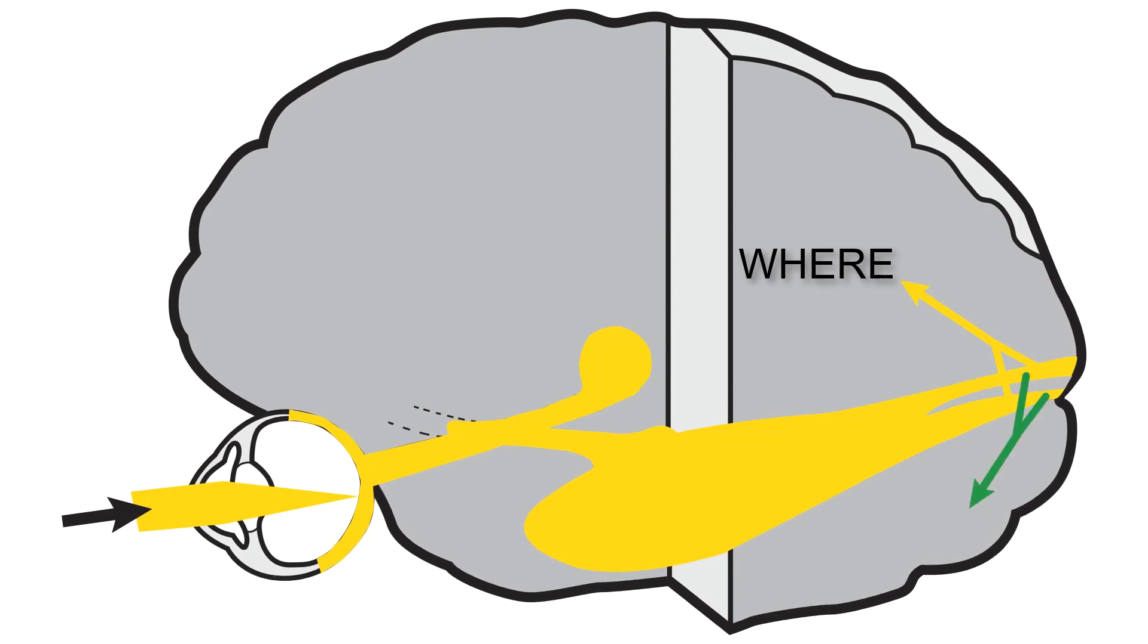The ventral perceptual stream conveys the signal to temporal vision-associated cerebral cortex for recognition of viewed material. It tells you what you are viewing and whether it is familiar. Vision Pathway Part 7 reviews the ventral stream.